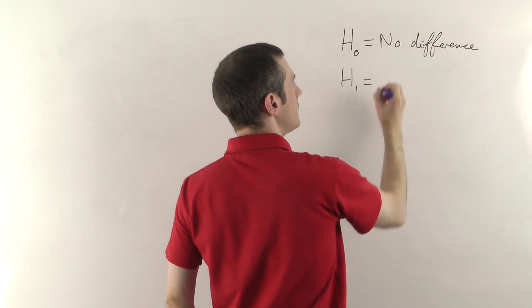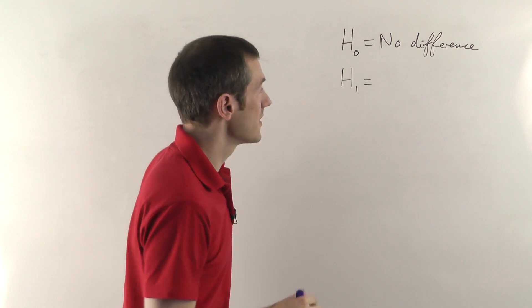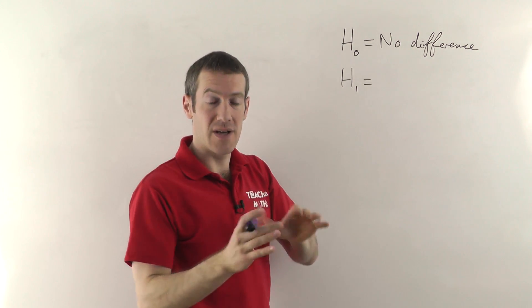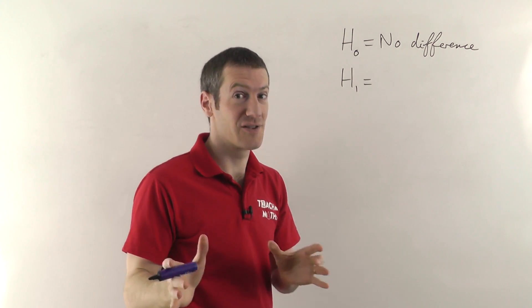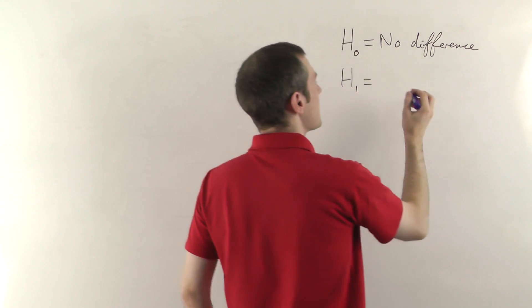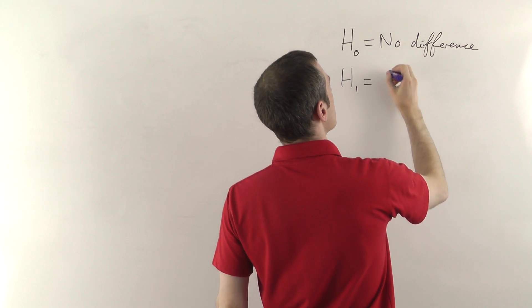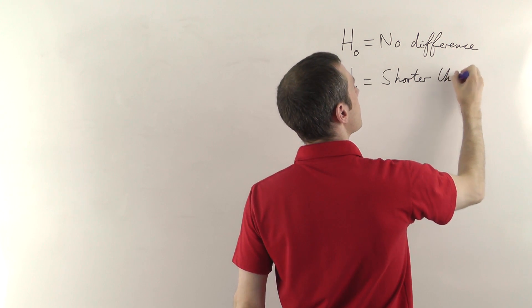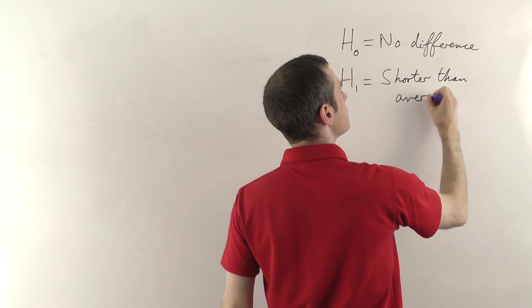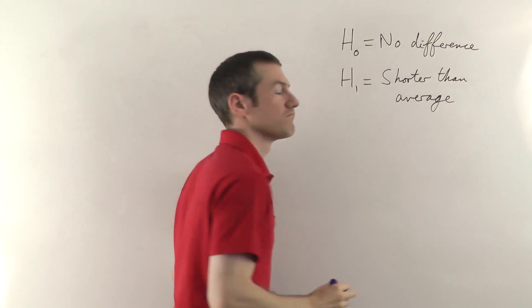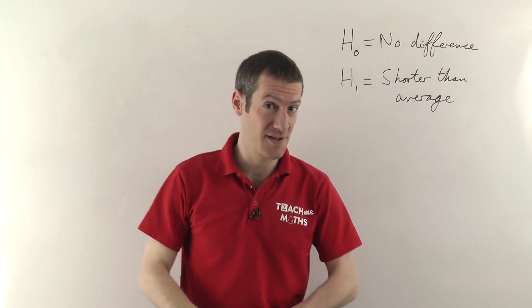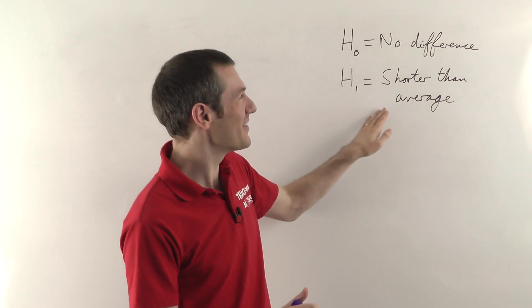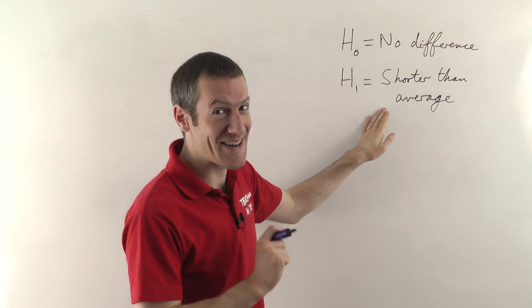H1, the alternative hypothesis, in this case is that your players are not only different from the mean but they're actually shorter than the mean. So the alternative hypothesis is that your players are shorter than average. That's what we're going to try and prove here — as the coach you need some kind of excuse as to why your team keeps losing, so we're going to try and prove that it's because they're shorter than average.